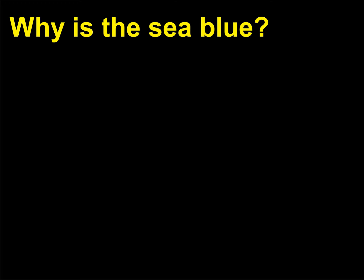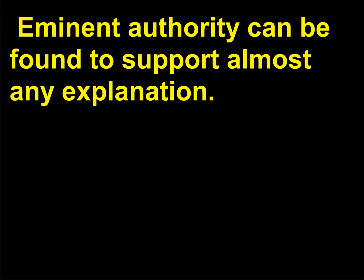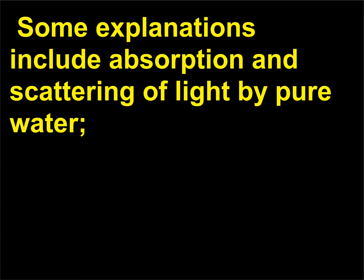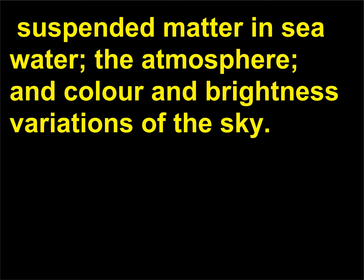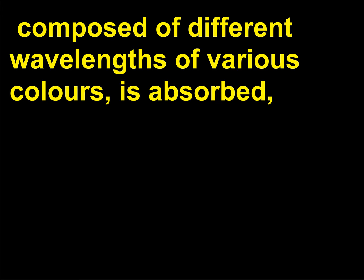Why is the sea blue? There is no single cause for the colors of the sea. What is seen depends in part on when and from where the sea is observed. Some explanations include absorption and scattering of light by pure water, suspended matter in seawater, the atmosphere, and color and brightness variations of the sky. One theory is that when sunlight hits seawater, part of the white light, composed of different wavelengths of various colors, is absorbed.